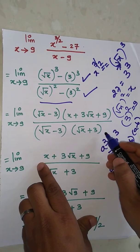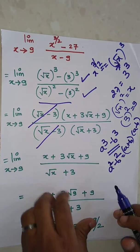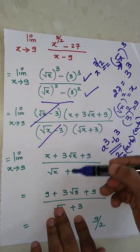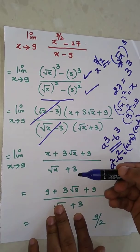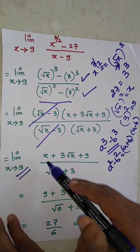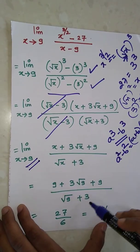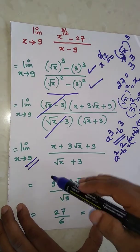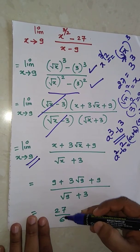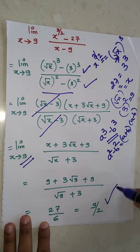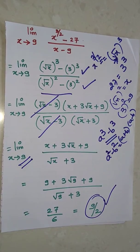Cancellation of these two terms. We're left with two terms, numerator one term and denominator one term. Replace x with 9 everywhere. If we solve this we get 27 over 6 which equals 9/2 as the final answer. Thank you.